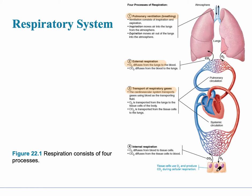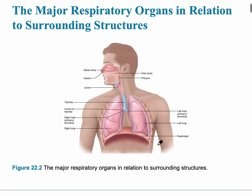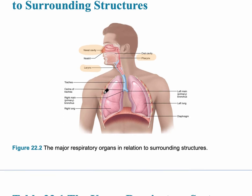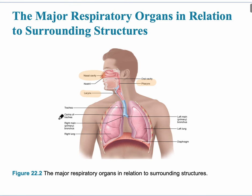Finally, that oxygen and the nutrients reach the systemic capillaries where internal respiration happens. The main respiratory organs in relationship to their surrounding structures are shown in this slide. We can see the upper respiratory system beginning with the nasal cavity, the pharynx, the throat, and the larynx, commonly thought of as the voice box. The lower respiratory tract begins at the trachea, the windpipe, and the carina is where it splits to each of the bronchi and continues into the lungs.